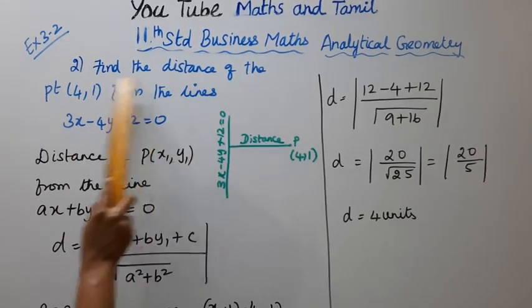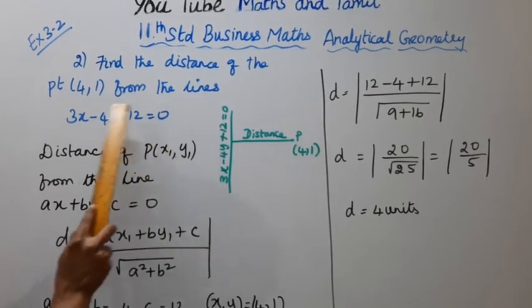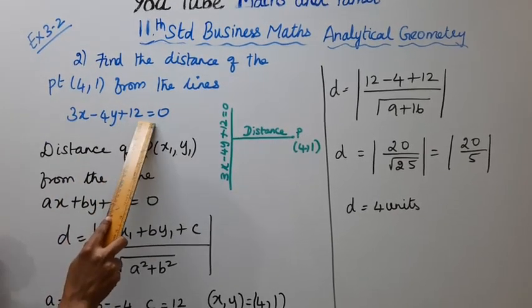Find the distance of the point (4,1) from the line 3x minus 4y plus 12 equal to 0.